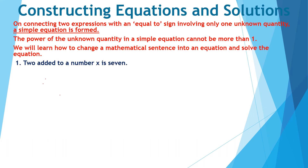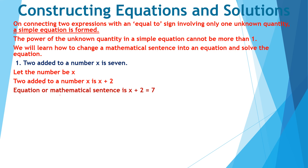2 added to a number x is 7. Let us say that the number is x. 2 added to the number will be x plus 2, and it is equal to 7. So the equation is x plus 2 is equal to 7. On solving this equation, we get x equal to 5, which is the required number.